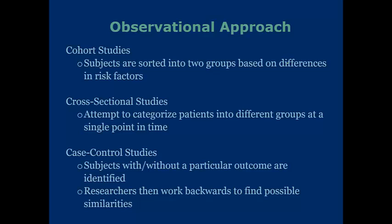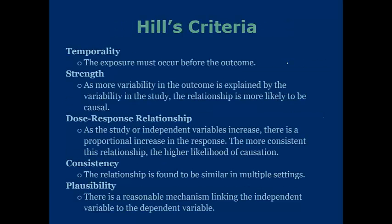Note that there is a distinction between causation and correlation. This brings us to Hill's criteria — a way to measure if the components of an observed relationship constitute causality, basically suggesting whether a relationship is causal and not just a coincidence. The first factor is temporality: the exposure must occur before the outcome. Strength: as more variability in the outcome is explained by the variability in the study, the relationship is more likely to be causal.